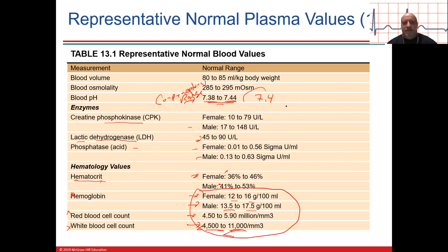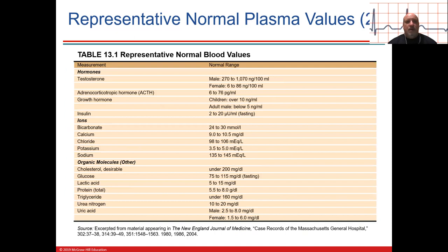The pH of blood is important. Let's learn the glucose levels — that's the one we talk about the most. Below 75 mg/dL is hypoglycemia, and above 115 mg/dL of blood is hyperglycemia. That's one I would store in memory.